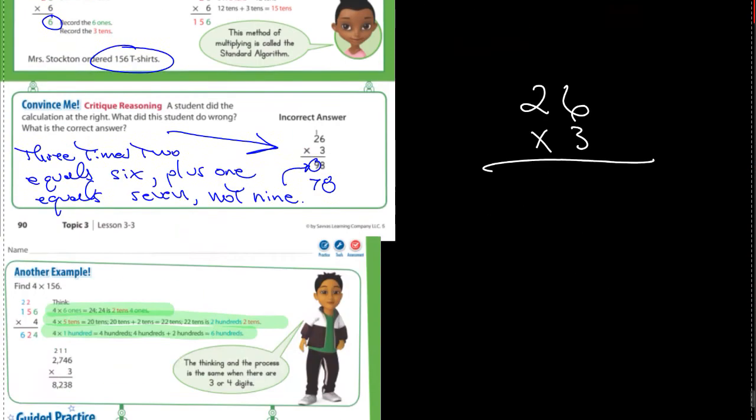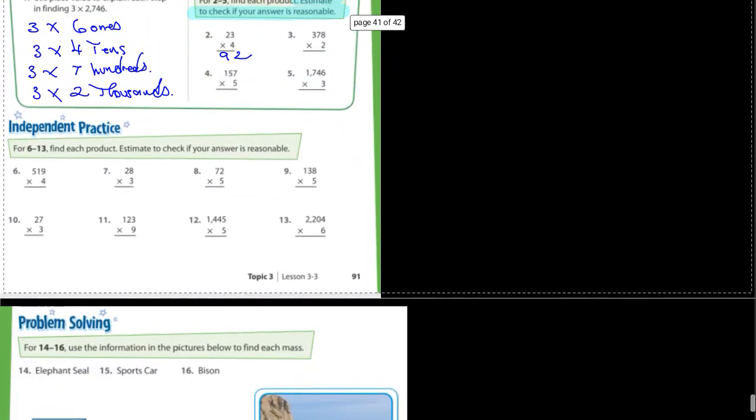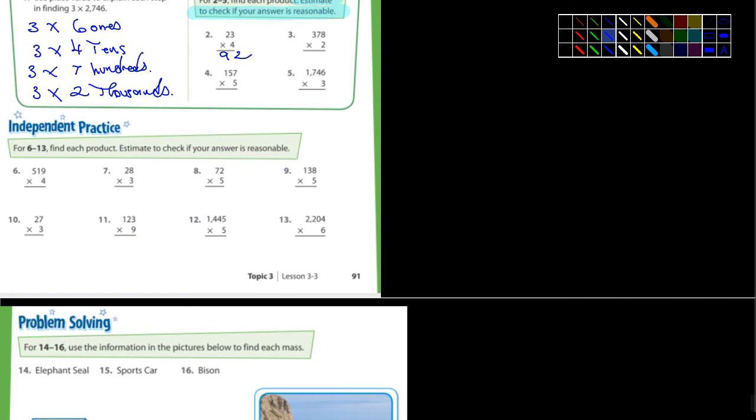But estimating is an excellent way to check. All right, let's move down a little bit further here. Independent practice. How about number 12? Let's take a look at number 12. So we have 1,445, and that's being multiplied by 5.